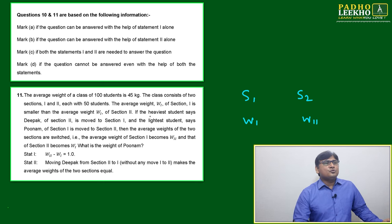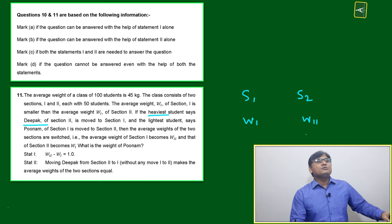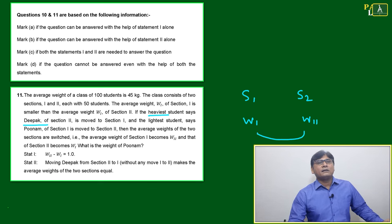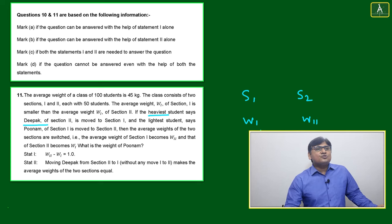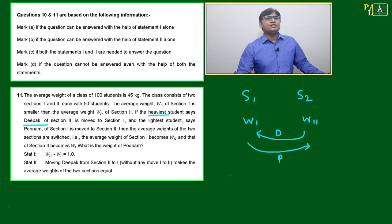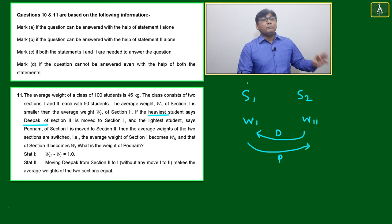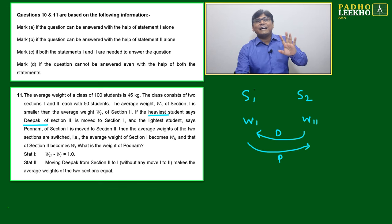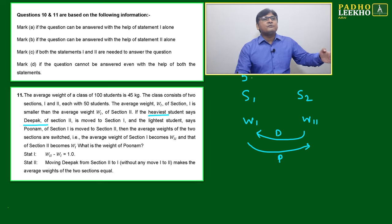The heaviest student, Deepak, from Section 2 is moved to Section 1. The lightest student, Poonam, from Section 1 is moved to Section 2. After this reshuffling, n is not changing — one is going out and one is coming in, so both sections still have 50 students each.